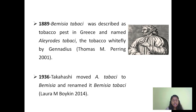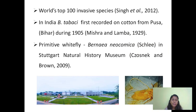Takahashi in the year 1936 renamed the genus Aleurodes as Bemisia, and it was finally named Bemisia tabaci. This Bemisia tabaci is recorded as the world's top 100 invasive species. In India, Bemisia tabaci was first found on cotton from Pusa during the year 1905.